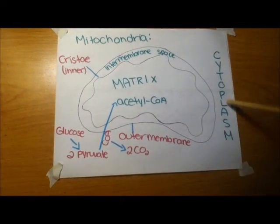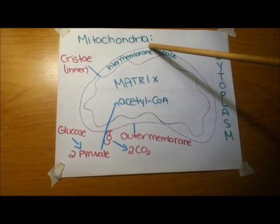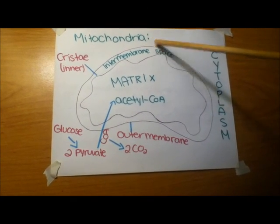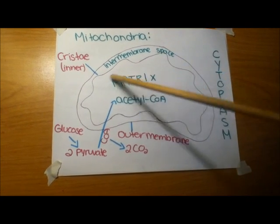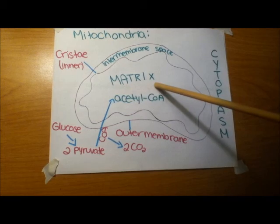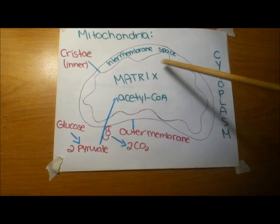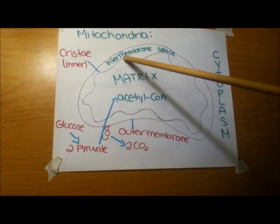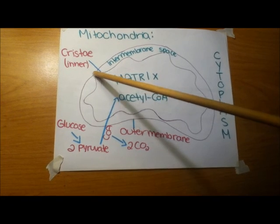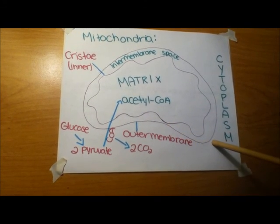In the cytoplasm, we have the mitochondria, and the mitochondria is where cellular respiration occurs. This middle part of the mitochondria is called the matrix, this part is the inner membrane space, this outline is the cristae, and the outer membrane is this part right here.